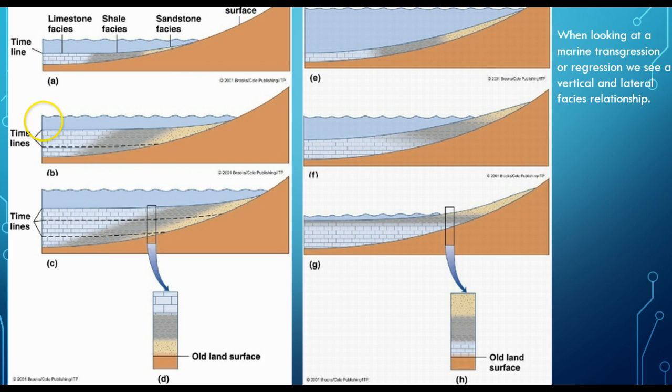As the water table begins to rise and moves up the shoreline, we see these facies moving towards the original shoreline and thickening. The limestone becomes slightly thicker, but also moves towards the original shoreline. We see the shale slightly thickening and moving towards the shoreline.